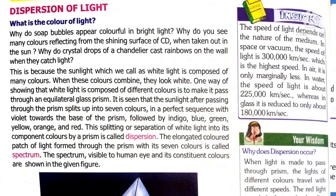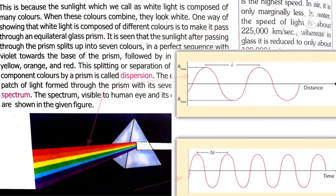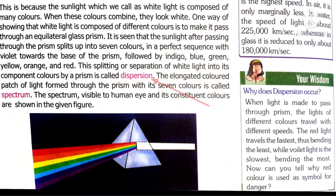Now we go on to dispersion of light. Sunlight appears to be white, but it is a mixture of different colored lights with different frequencies and different wavelengths. All these colored lights travel at the same speed, so we see sunlight as white. But when the same light is passed through a solid prism, the speed of the different colored lights varies depending on their frequency, and we see seven different colors. This process of splitting white light after passing through a prism is called dispersion. The reason for dispersion is the variation in speed of light — different colors travel at different speeds in a solid medium.